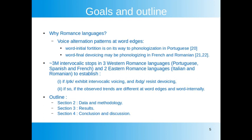We investigate approximately three million intervocalic stops in three Western Romance languages — Portuguese, Spanish, and French — and two Eastern Romance languages — Italian and Romanian — to establish: one, if voiceless stops exhibit intervocalic voicing and voiced stops resist devoicing; and two, if so, whether the observed trends differ at word edges versus word-internally. We present data and methodology, then results on voicing and devoicing patterns, before sharing preliminary results on the effect of speaker gender, and finally conclude and discuss.